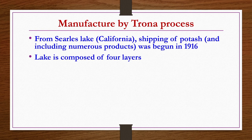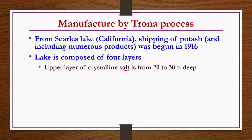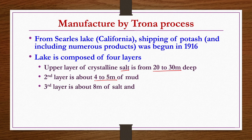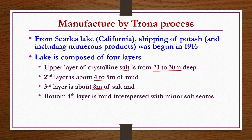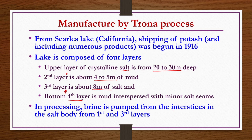This lake is composed of four layers: the upper layer of crystalline salt is 20 to 30 meters deep; the second layer is about 4 to 5 meters of mud; the third layer is about 8 meters of salt; and the fourth layer is mud interspersed with minor salt seams. For the Trona process, brine is pumped from the interstices in the salt body from the first and third layers.